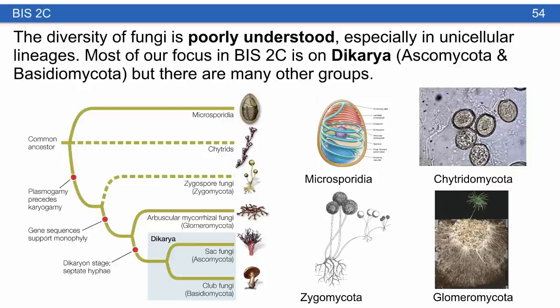The diversity of fungi is really poorly understood, partly reflected by polytomies in their phylogeny, concentrated in unicellular groups where we just don't know enough. Most of our focus in BIS2C is on the Dikarya. Other groups briefly mentioned include microsporidians, which can be important in human health; chytrids, partly implicated in amphibian decline; zygomycota, which forms many important bread molds; and glomeromycota, which are really important for most plant health because they form arbuscular mycorrhizae.